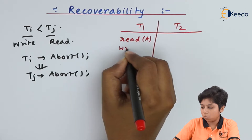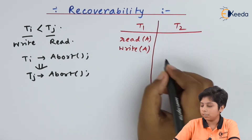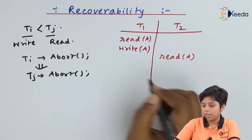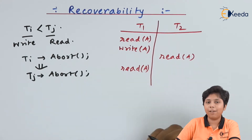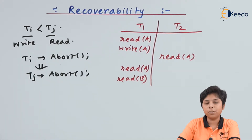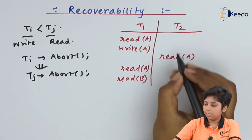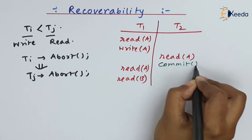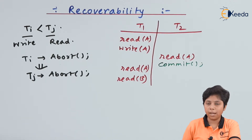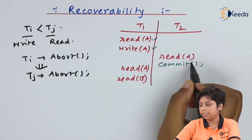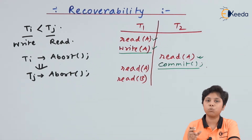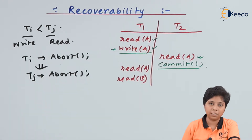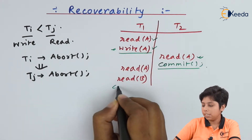Transaction T2 is reading the value of A, and then T1 is reading A again and then reading B. Now suppose T2 commits immediately after its read operation. T1 reads and writes A, and T2 reads that updated value of A that T1 wrote, then T2 commits. This means T2 has read a value of A that was updated by T1, but T1 has not yet committed.